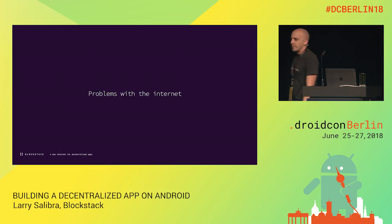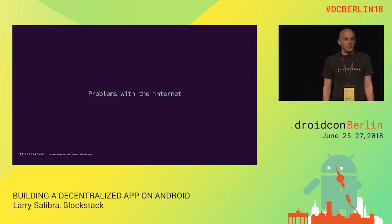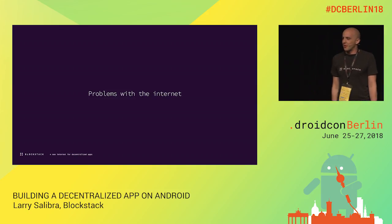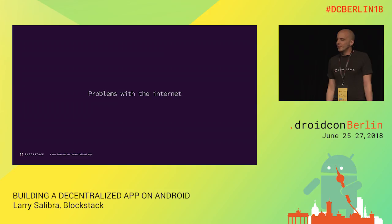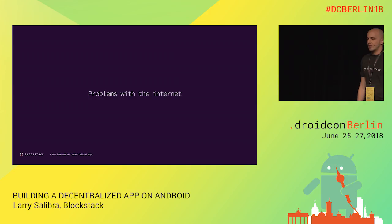I want to talk about some of the problems we have with today's internet and get your thoughts. If you have an idea of a problem with the internet that really bugs you or is a problem for society, please raise your hand. One audience member noted that corporations have more power than they should, that the European Union, for example, can block access and there's not so much free speech left on the internet — and it can be solved with a decentralized internet.